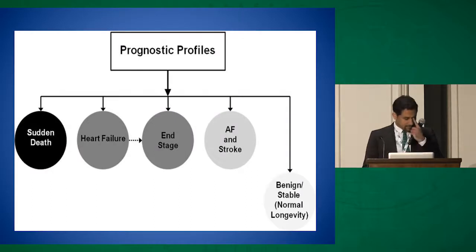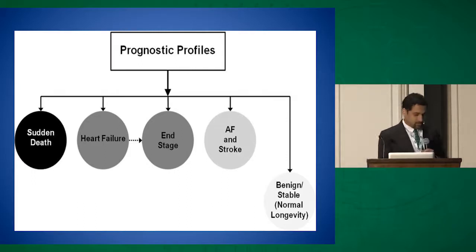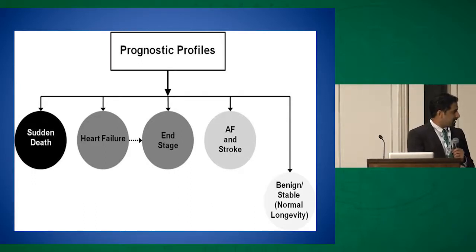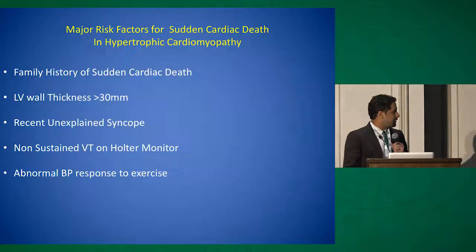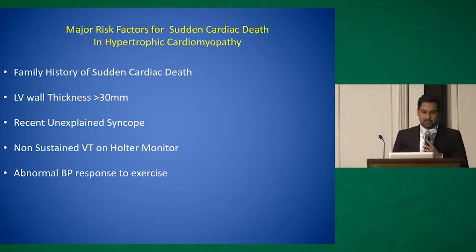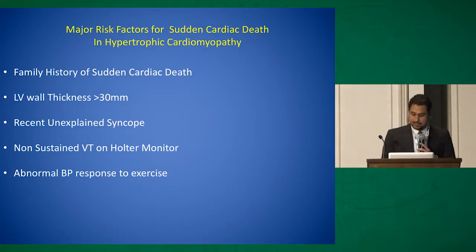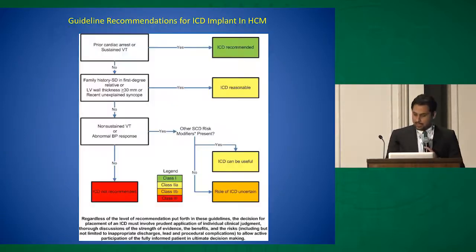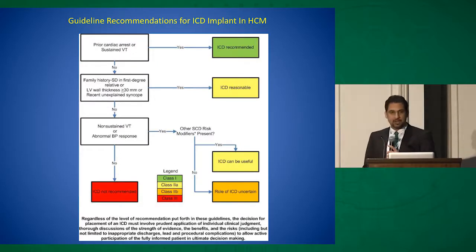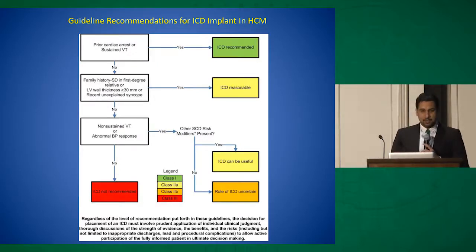A hypertrophic cardiomyopathy patient can present in one of several clinical profiles. Luckily, most of them would end up in an area where they'll have a normal lifespan and a stable course. However, there are some dreaded events which can occur in this population at an event rate of around 6% per year. As electrophysiologists and cardiologists, it's our job to identify this group of patients. There are certain risk factors which have already been established and we all know about them.